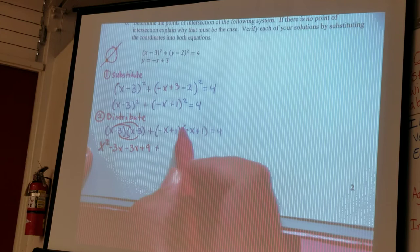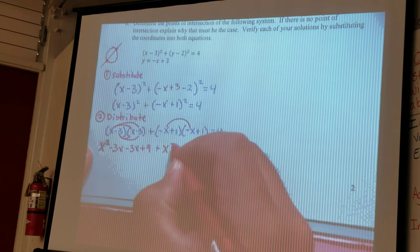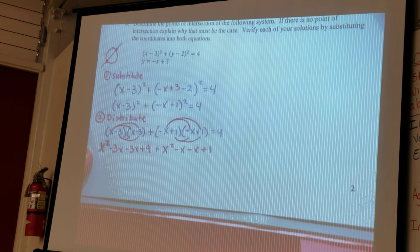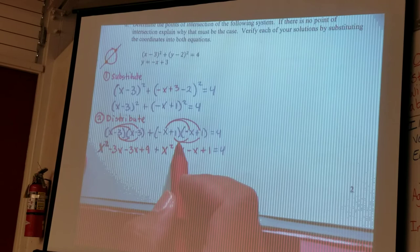x squared and then we'll also expand this one or distribute this one, so negative x, so negative x times negative x is positive x squared, negative x times 1 is negative x, 1 times negative x is negative x, and 1 times negative 1 is plus 1. Alright, we have these now.